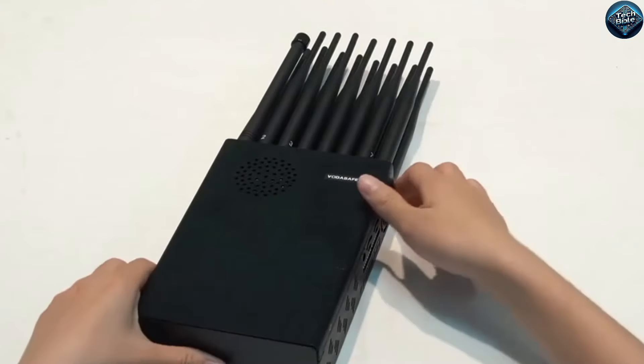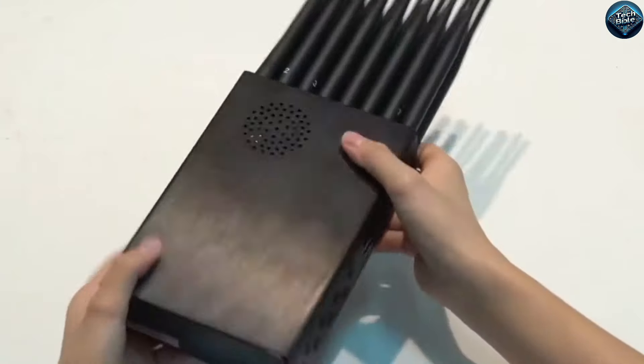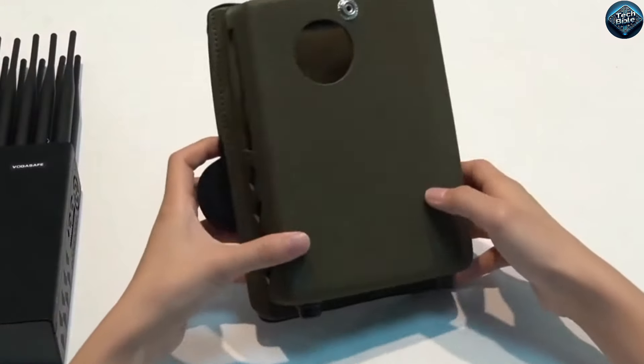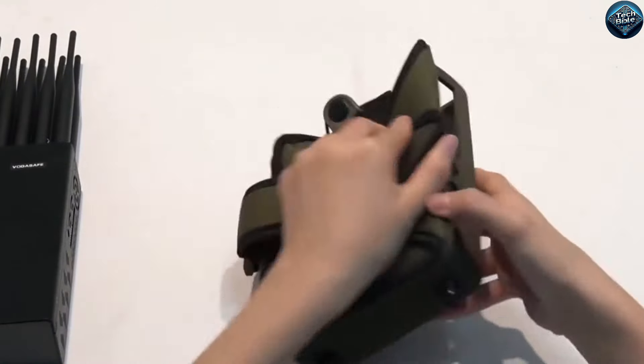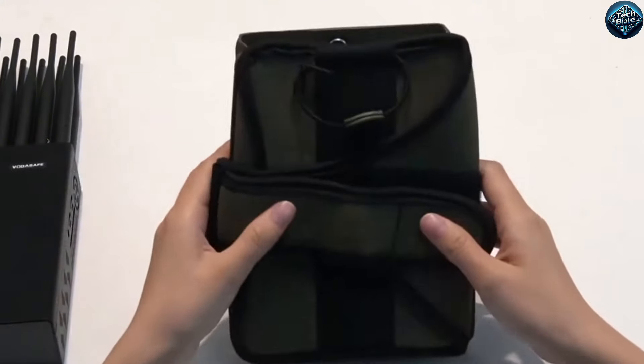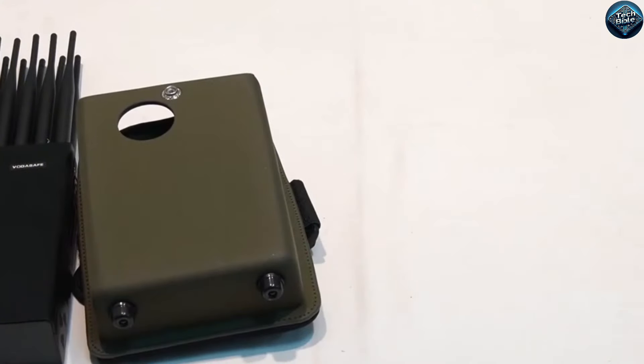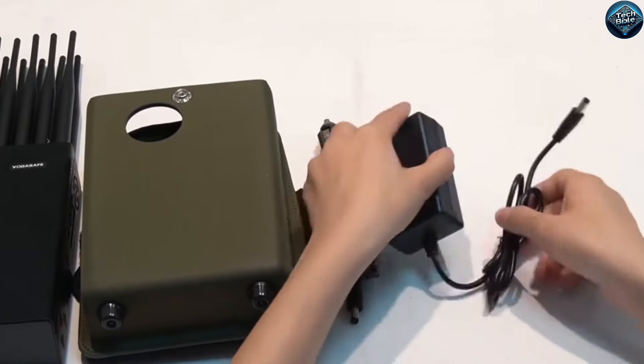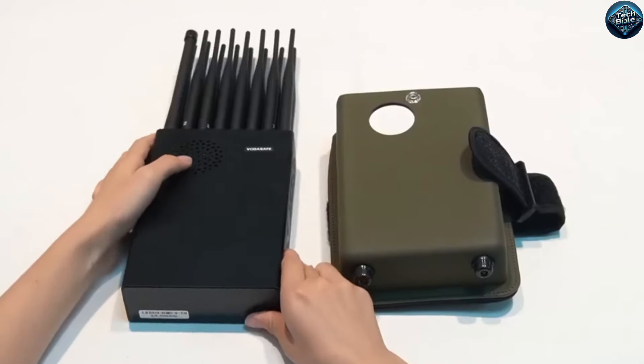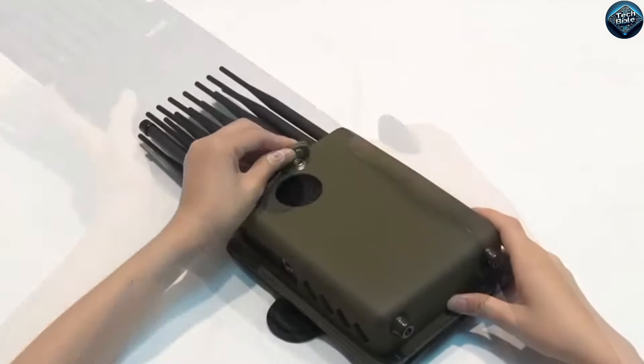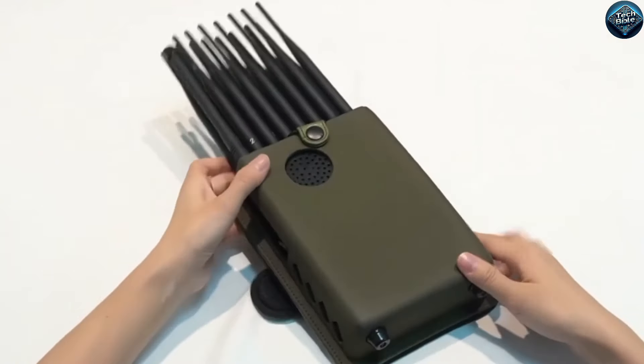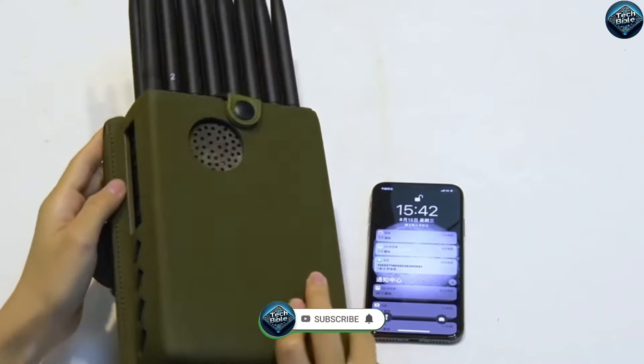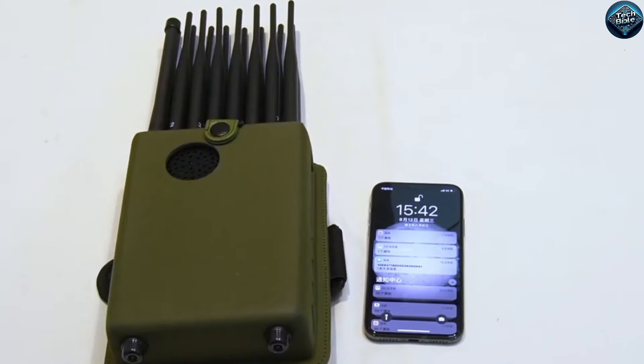The GSM Jammer is a controversial gadget that's banned in many countries due to its ability to disrupt mobile phone signals within a specific range. Originally designed to prevent unauthorized communication in secure areas, this device blocks GSM signals by emitting radio frequencies that interfere with mobile phone reception. While it can be useful in places like theaters or exam halls to prevent distractions, its use raises serious concerns about safety and privacy, particularly in emergencies where communication is critical.